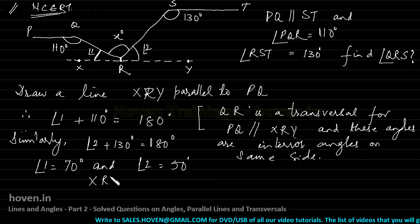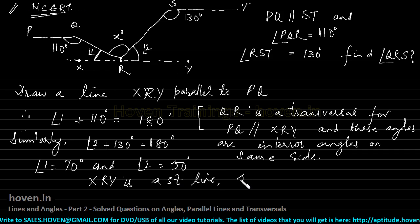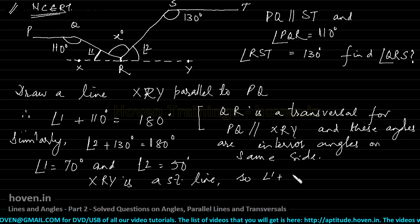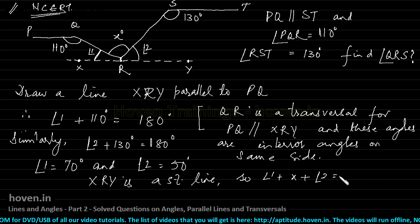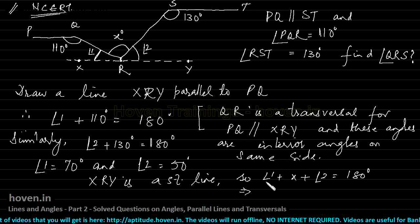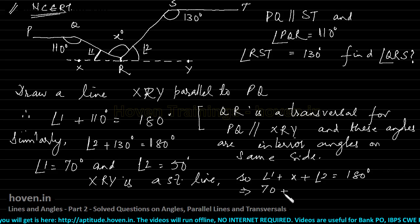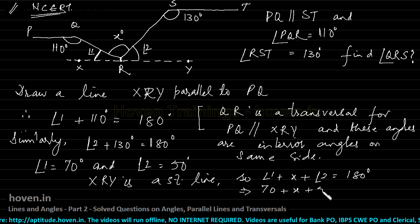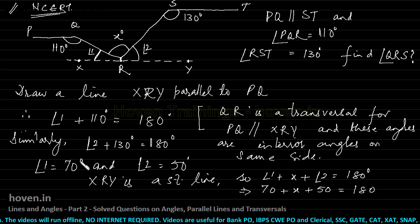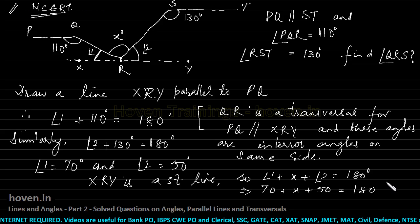xRy is a straight line. So angle 1 plus x plus angle 2 should be 180 degrees. They will add to 180 degrees. Which implies, put angle 1 as 70 plus x plus angle 2 as 50 which is equal to 180. Now, I am writing somewhere degrees and somewhere I am missing them. But in your class 10th or other exams, your examiner might cut marks.